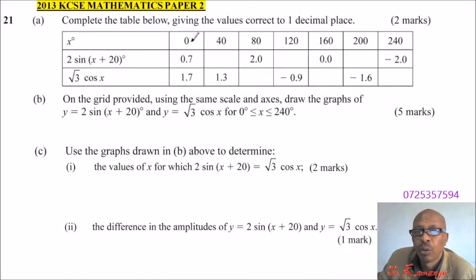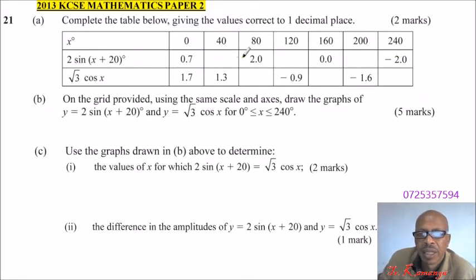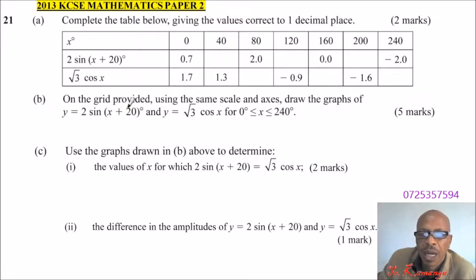We are given a row representing x degrees from 0 up to 240. We have a function 2 sin x, then 2 sin(x + 20°). Some values are given, and we also have √3 cos x with some values. You are supposed to complete this table.